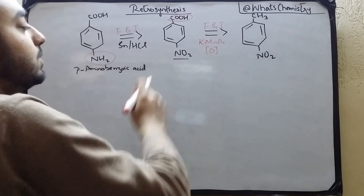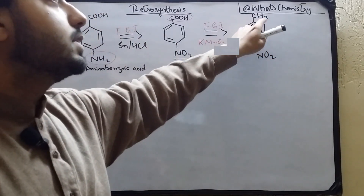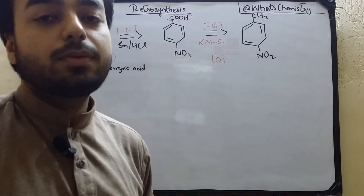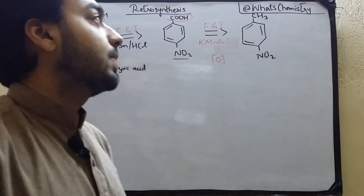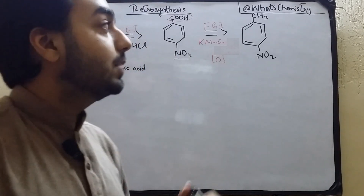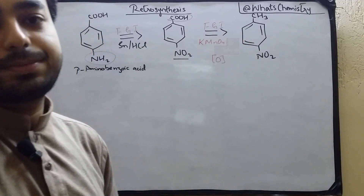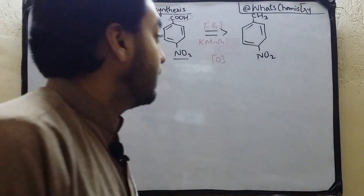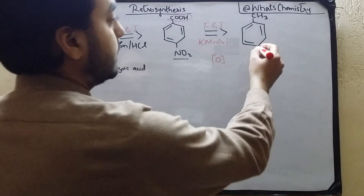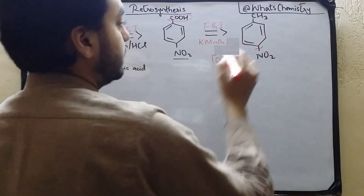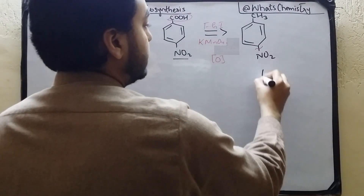After oxidation, we have the alkyl group. We know very well that an alkyl group is an ortho-para directing group, so it can allow another group on its para position.